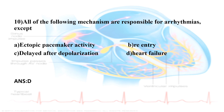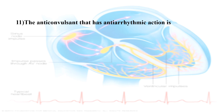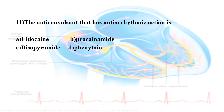Eleventh question: The anti-convulsant that has anti-arrhythmic action is? The options are: Option A, Lidocaine; Option B, Procainamide; Option C, Disopyramide; Option D, Phenytoin. The correct answer is Phenytoin. Phenytoin is an anti-convulsant and is classified as a Class 1B anti-arrhythmic agent. Its anticonvulsant action is used quite commonly.